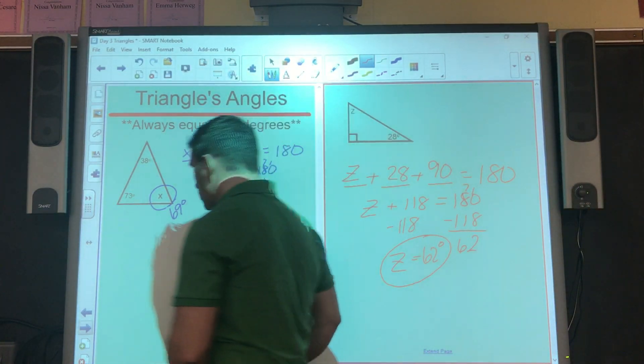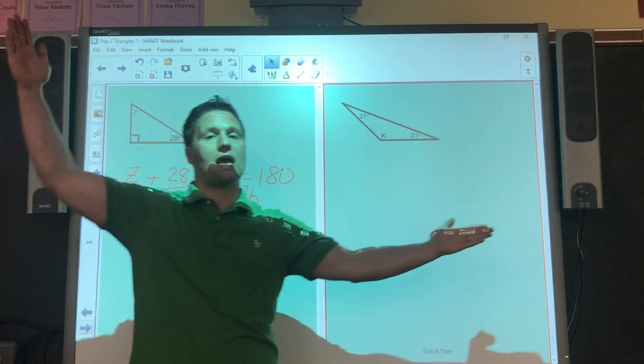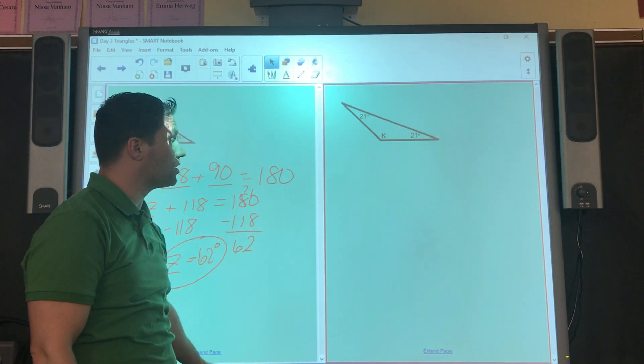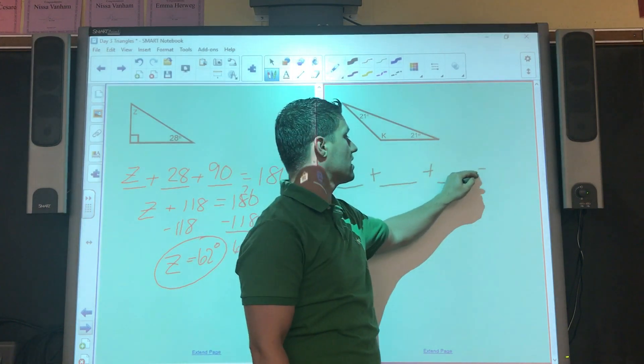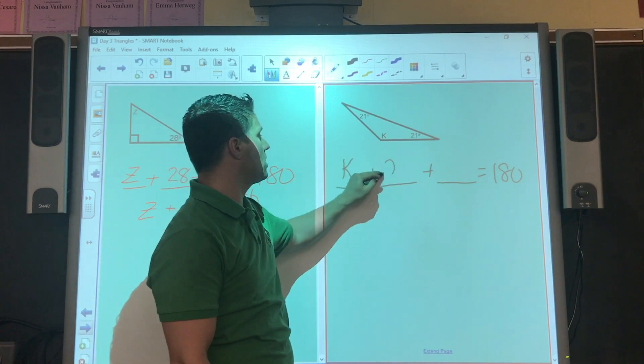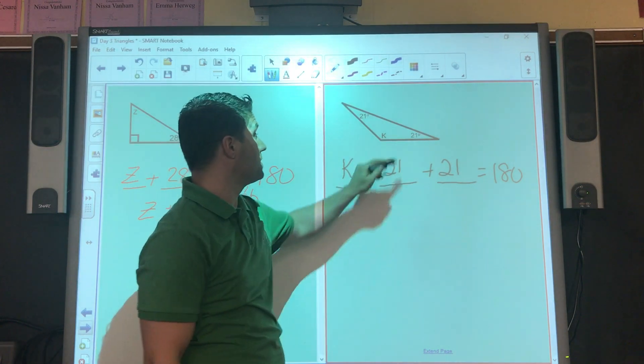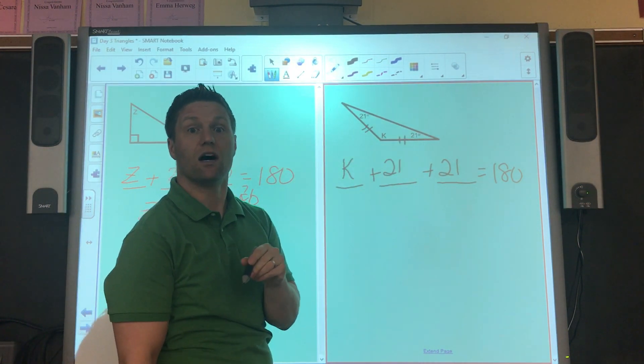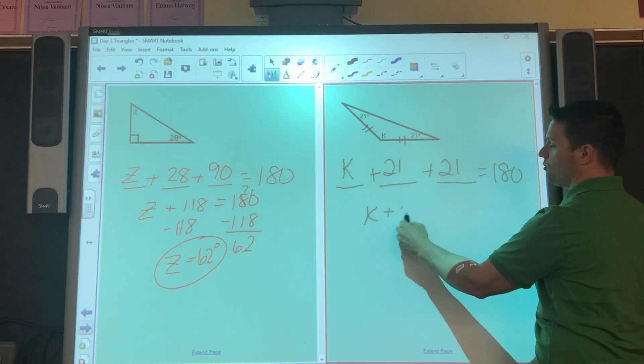Now, the last triangle, even though it's an obtuse triangle, even though it has that one angle that's going to be greater than 90 degrees, I can still treat it as if it were any type of triangle. All angles get added together to equal 180. Well, k is the one I'm looking for, and I have a 21 and a 21. Wait a minute, if I have two angles that are the same, that must mean that these sides are also the same. This is an isosceles obtuse triangle.